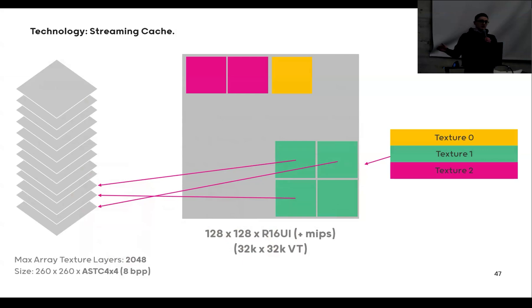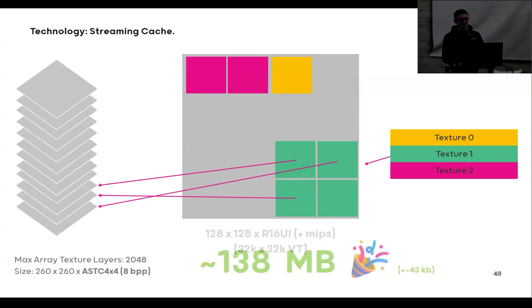So what we do is we split up every texture into same-size textures, and that's going into a texture array layer with 260x260 ASTC 4x4 compressed tiles.